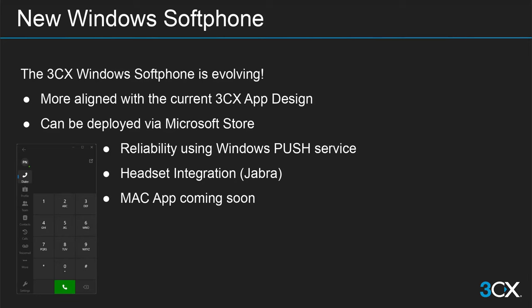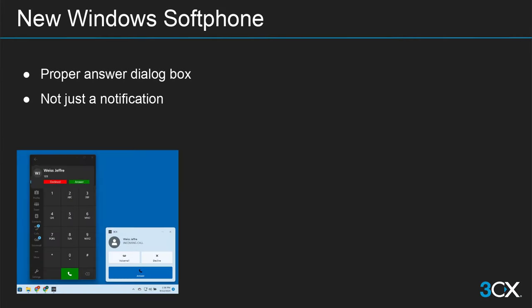We now have an overhauled Windows soft phone with a new design more aligned with the current 3CX mobile application design. Deployment will be through the Microsoft Store, allowing us to centrally push out updates. It is currently in beta and can integrate with Jabra headsets. A Mac application will also be released very soon. With the web client and PWA, a call coming in gives you a browser notification. With the Windows soft phone, it is a proper dialog box so you can answer, decline, or divert the call to voicemail directly from the application — not just a notification.